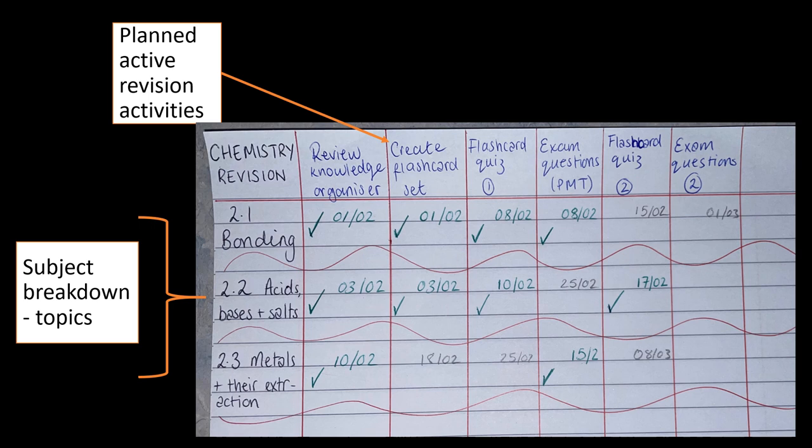Once you have let's say reviewed the knowledge organizer you will tick that off and you write the date, and then maybe also in that same session you have also created a set of flashcards. Then you can see when you last looked at that content and you can use the research that we mentioned earlier to think about an appropriate space of time before you then revisit. Let's just say we're going to think okay a week later I want to revisit this and go through the flashcards.